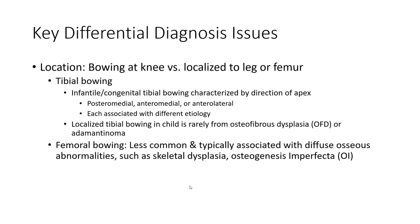Localized tibial bowing in a child is rarely from osteofibrous dysplasia or adamantinoma. Femoral bowing is less common and typically associated with diffuse osteochondral pathology such as skeletal dysplasia, osteogenesis imperfecta, and rickets.